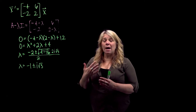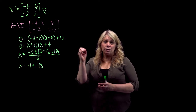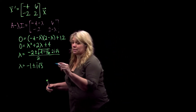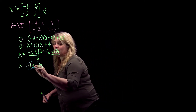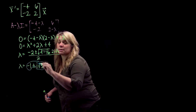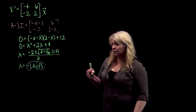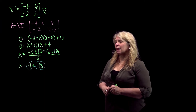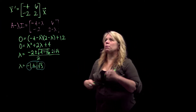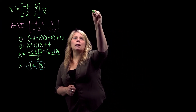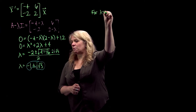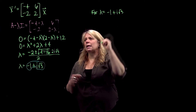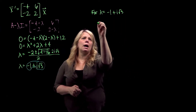For the method in our textbook, you will want to use the eigenvalue with the plus sign. You can use the one with the minus, but then there are some sign changes in later steps, so you have to be careful. I'm going to use the one with the plus, so lambda equals negative 1 plus i√3, plugged into the A minus lambda I matrix.